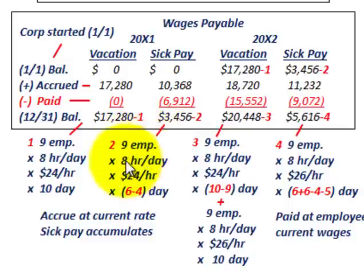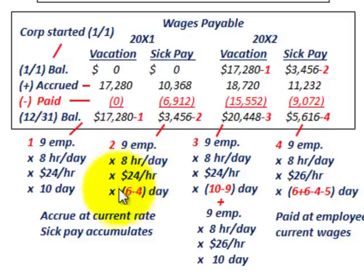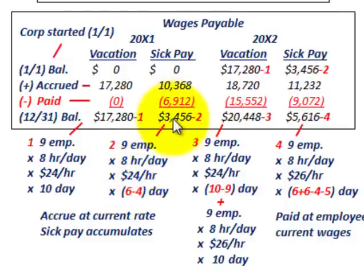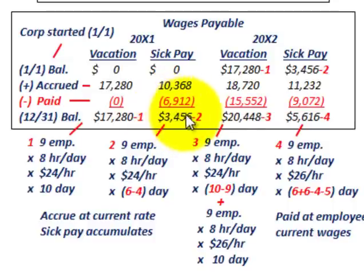You can also verify this as a cross-check: 9 employees, 8 hours per day, $24 per hour — employees were given 6 days but only used 4, so there are 2 days remaining. Multiply that out and you get the same $3,456, which confirms the ending balance based on remaining days.